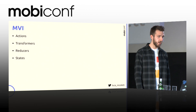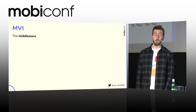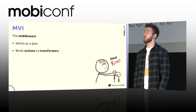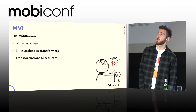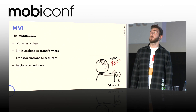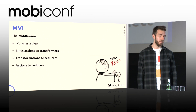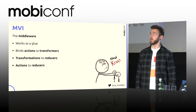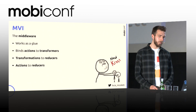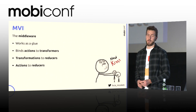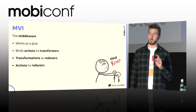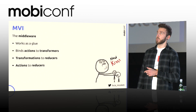We also have a middleware component, which works as a glue, because it binds actions to transformers, transformations to reducers, or actions to reducers directly. That's because in our implementation, transformers are optional. A basic example would be a switch — it doesn't require any additional business logic, so we can just map the action of the user clicking the switch to a new state.